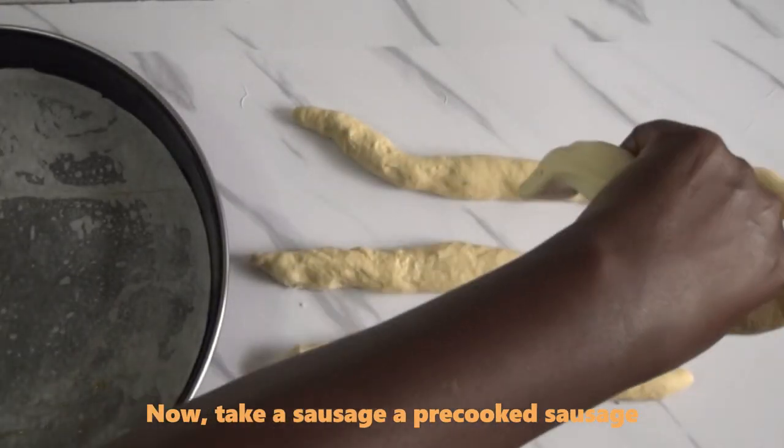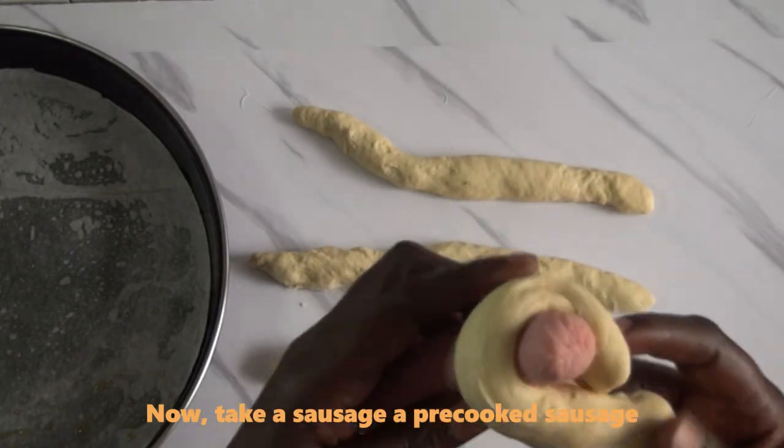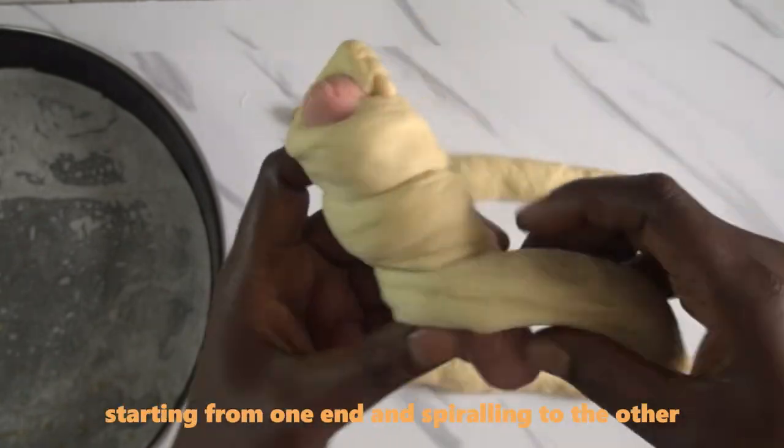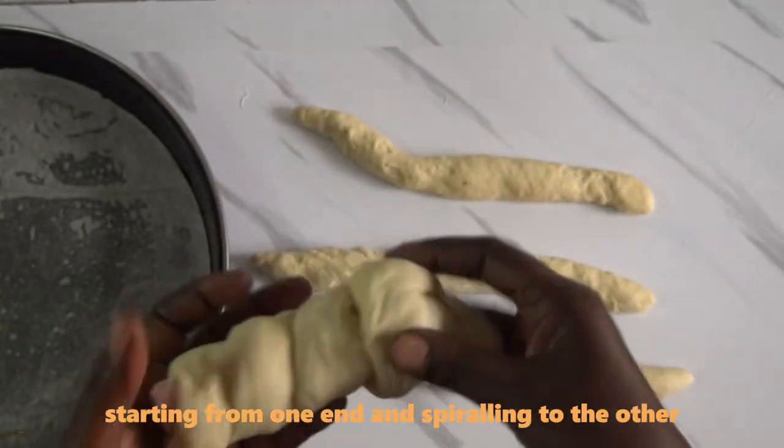Now take a sausage, a pre-cooked sausage, and wrap each strip of dough around it, starting from one end and spiraling to the other. Repeat this process until all the four sausages are done.